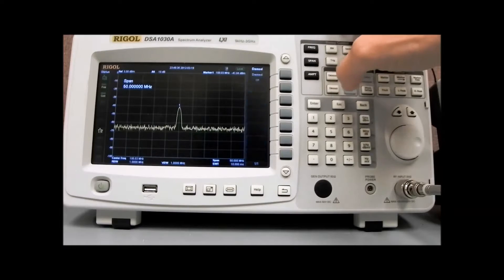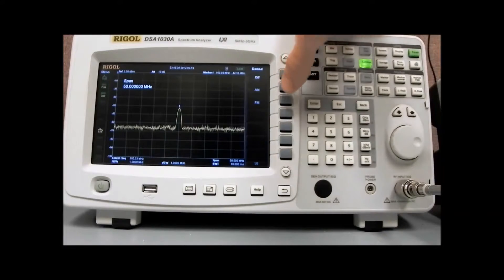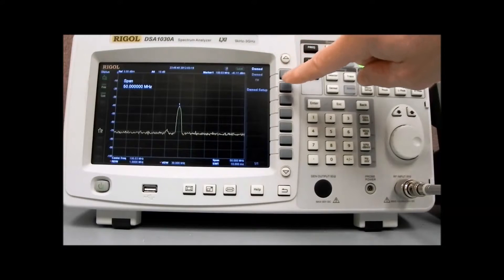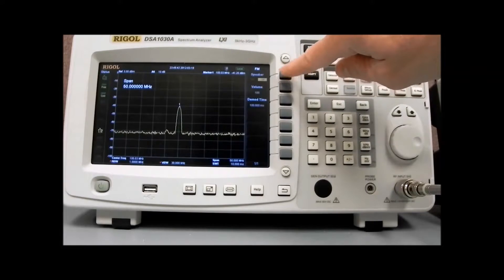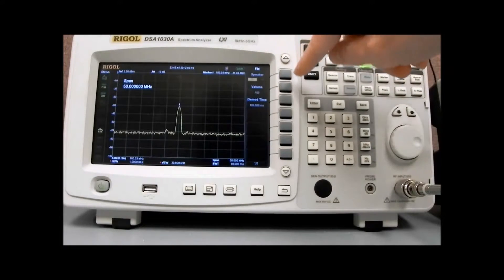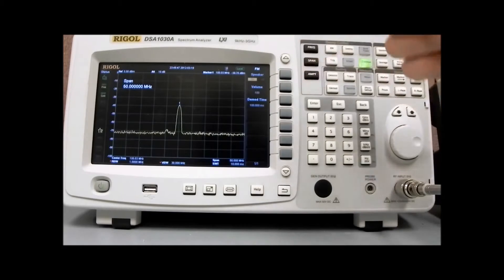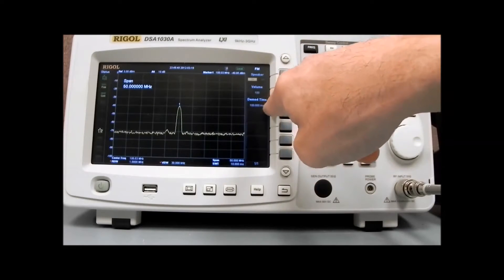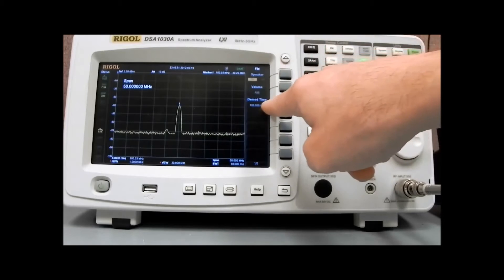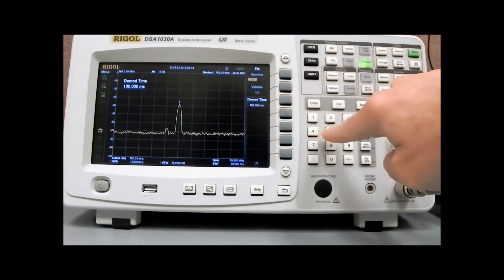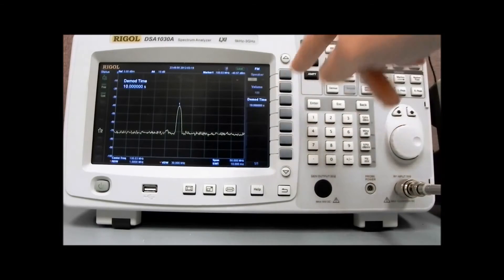Turn the demod onto FM. Then we want to set it up. We can turn the speaker on. And you can hear, it's going very rapidly. It's scanning at 10 milliseconds, or demodulating in 100 milliseconds. If we put that up to a larger value, let's say 10 seconds.